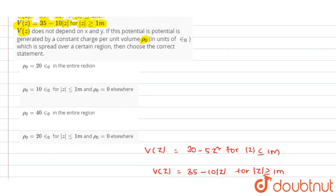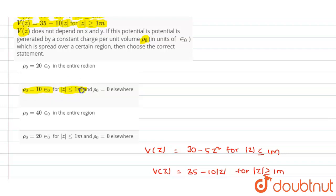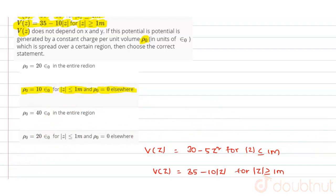Comparing with the four options: for |z| ≥ 1 m, ρ₀ = 0, and for |z| ≤ 1 m, ρ₀ = 10ε₀. Therefore, option B is the correct answer.